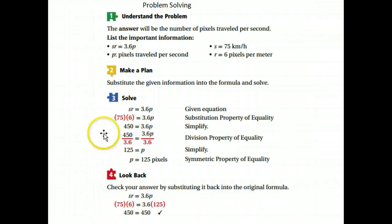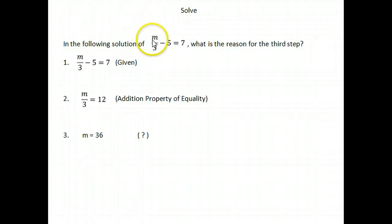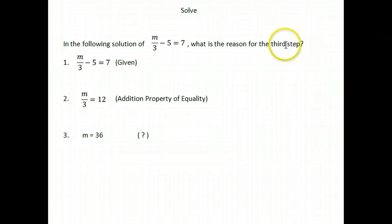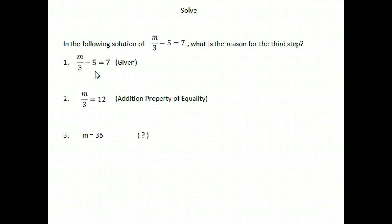In the following solution of m divided by 3 minus 5 equals 7, what is the reason for the third step? When we're solving this equation, first we write down the problem. Why do we know that? Our reason is that we were given that information.